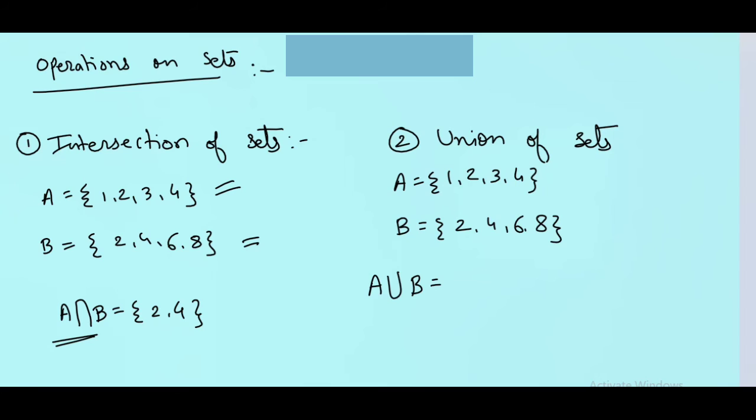Union is written in this way, this big U. And in the union, what we are going to do is, we will write down all the elements of both the sets and we are taking one care that the repeated elements, we have to write down the repeated elements only once. For example, 2 and 4, they are the common elements. So, here we have written them only once. So, this is the intersection and this is the union.